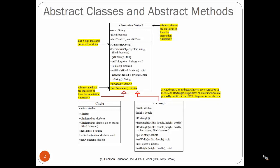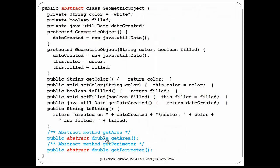We still say that getArea and getPerimeter are overridden in the subclasses Circle and Rectangle. They are abstract in the superclass because we don't have sizes. In the UML diagram we don't need to specify abstract methods again in the subclasses, because we know they must be implemented there. To declare an abstract class in Java, we specify the modifier 'abstract' in front of the class: public abstract class GeometricObject.